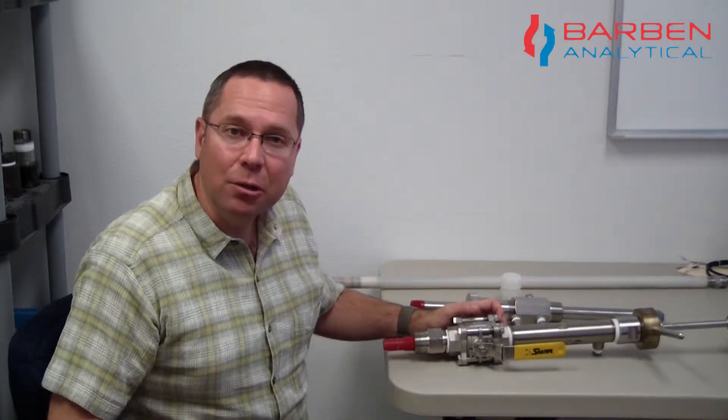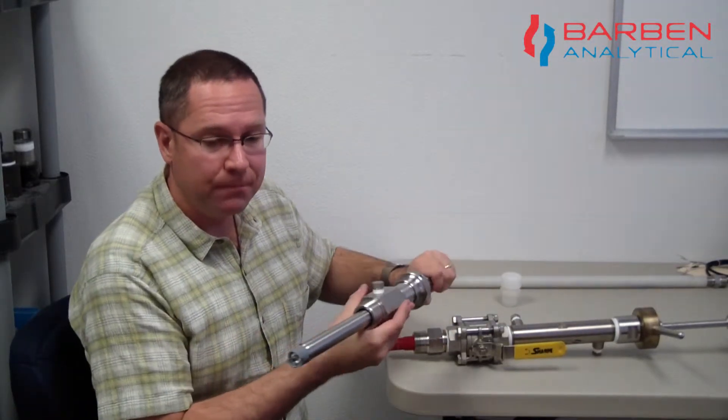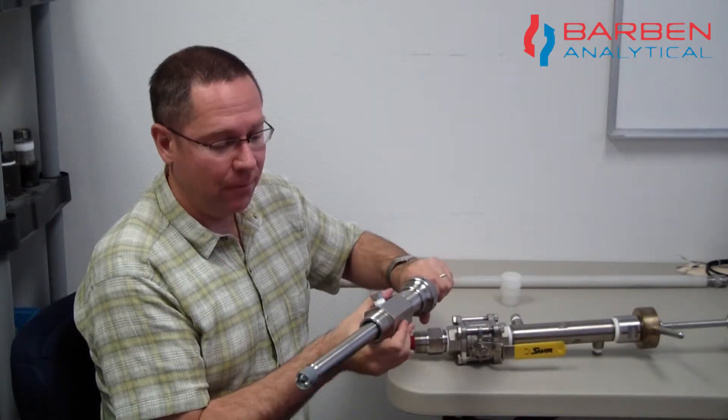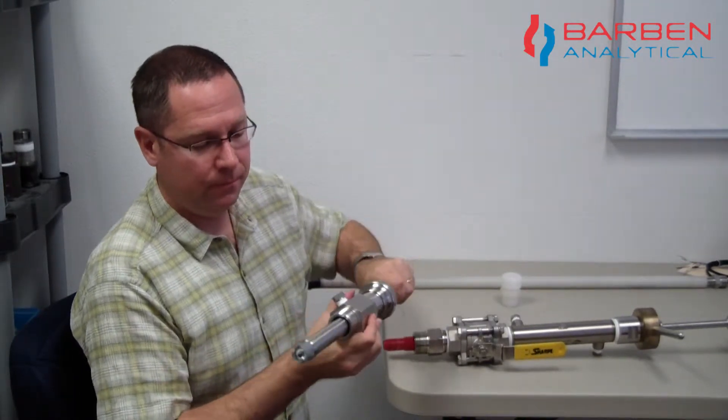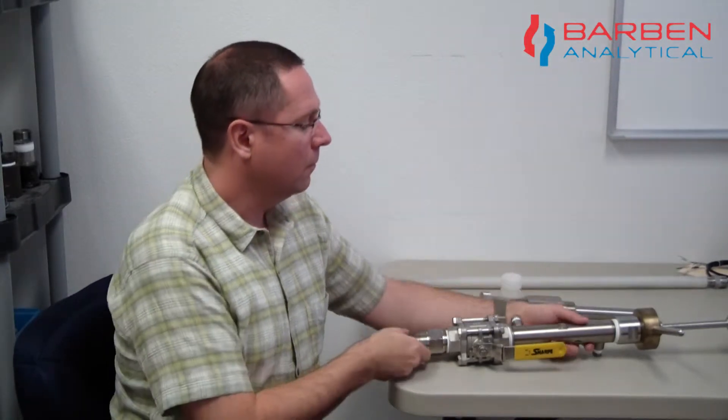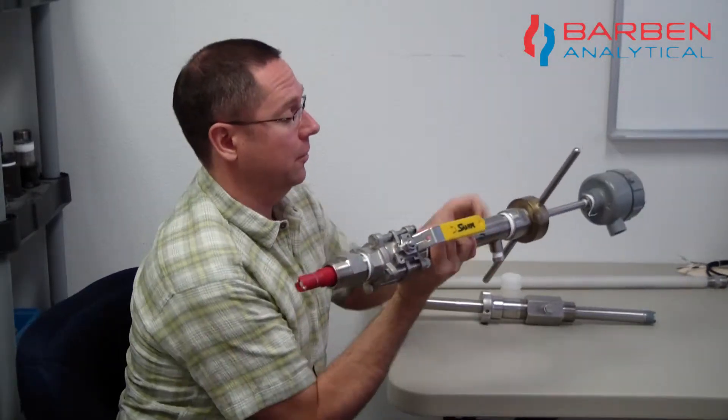In past videos we've taken a look at hot tap retractable sensors. Here's an example, our 547. Or here's our high pressure 546 product.